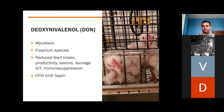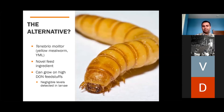Due to these effects, we need to find uses for that wheat, and one of them could be Tenebrio molitor, i.e. the yellow mealworm. It is a novel feed ingredient for the modern feed industry and can grow on high-DON feedstuffs with negligible impacts on growth, mortality and fertility. We have fed mealworms on up to 95 parts per million DON while detecting less than 0.1 parts per million within their bodies.